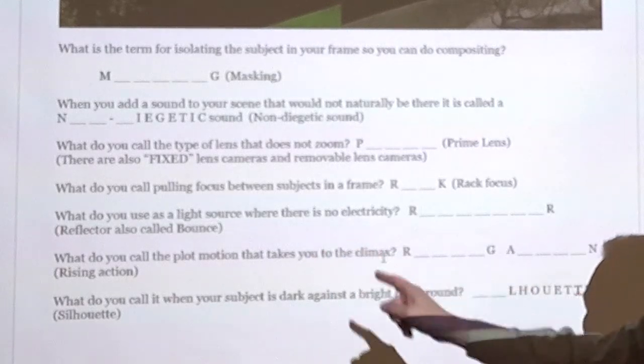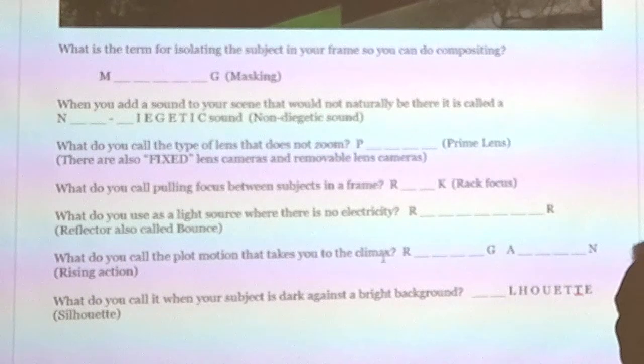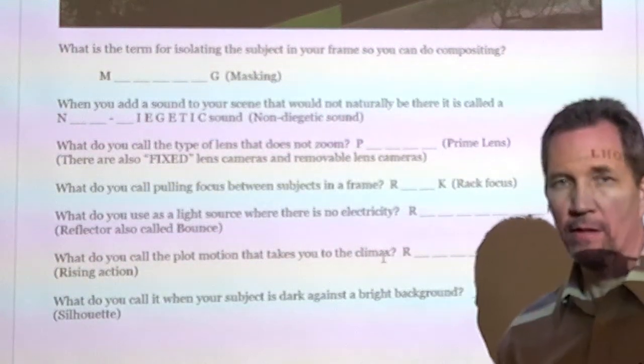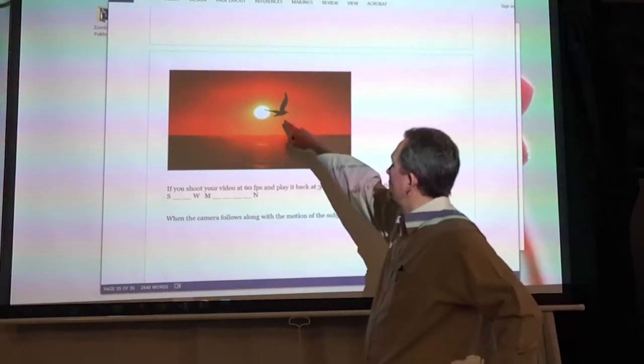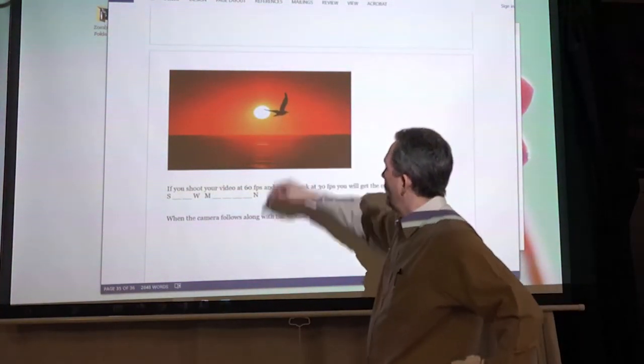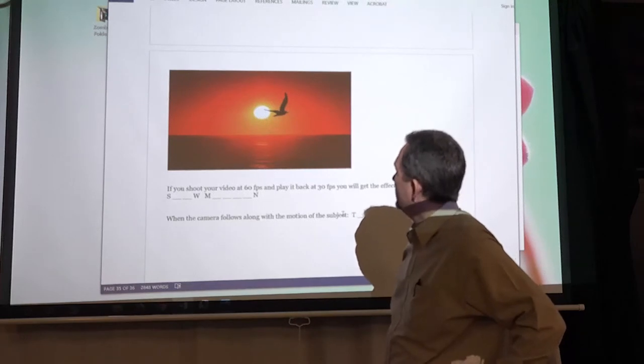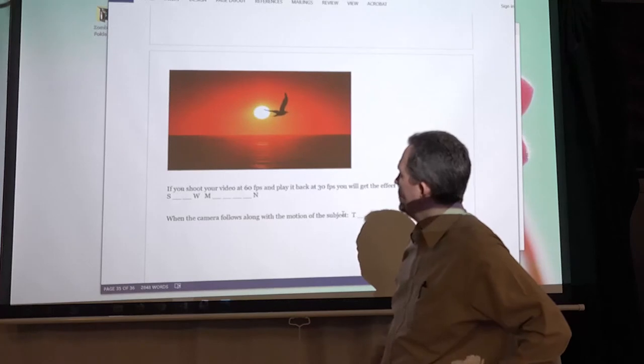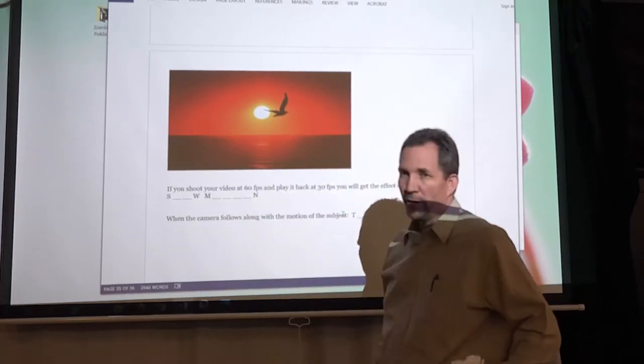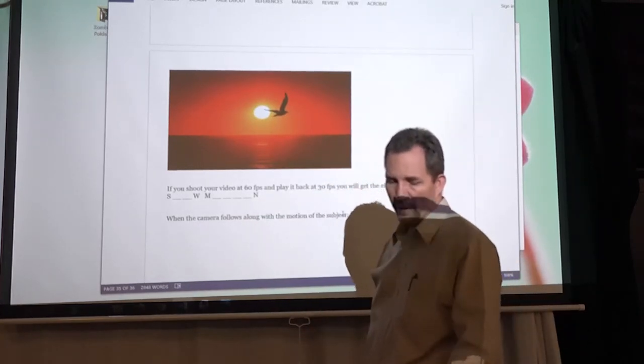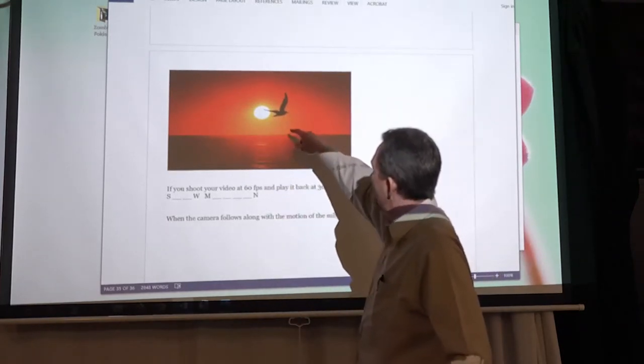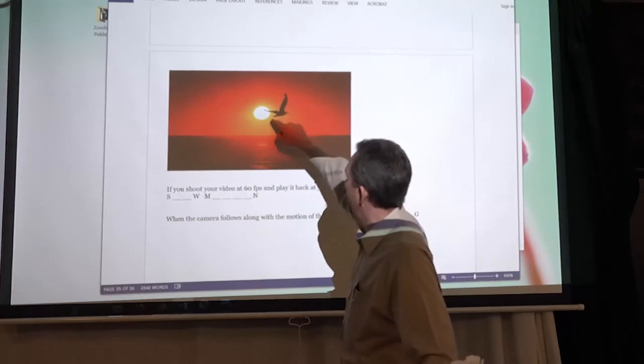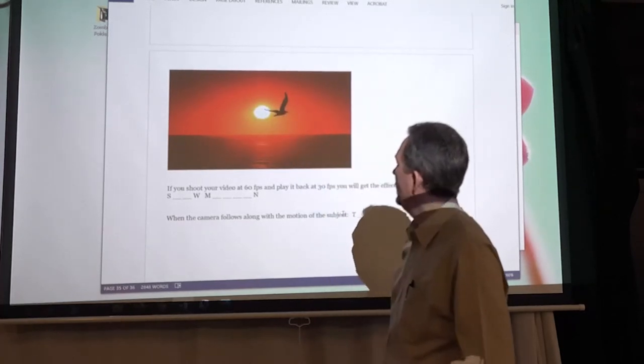What do you call it when your subject is dark against a bright background? That's a very difficult word to spell. Silhouette. It's got to be French. There's a beautiful picture of a seagull against, boy, I'd like to be there right now, against a nice little sunset sun out on the ocean. Picture me standing here in the beach. Well, don't picture me because maybe I've got white legs. But there I am enjoying life and I look up and I see the subject is dark against a bright background. That's called being in silhouette.